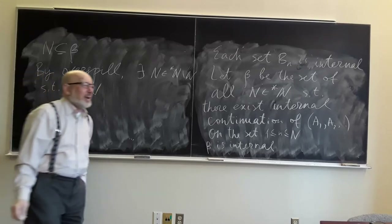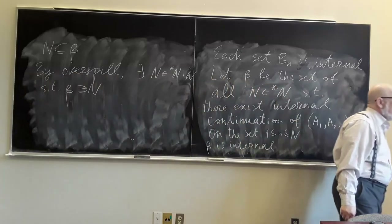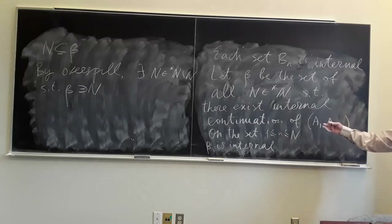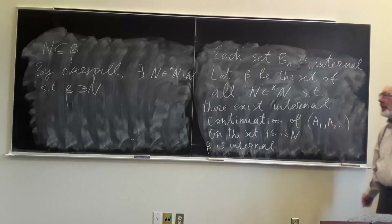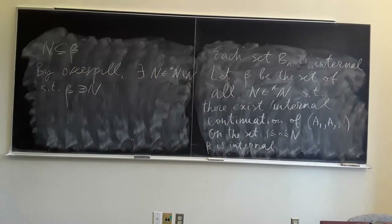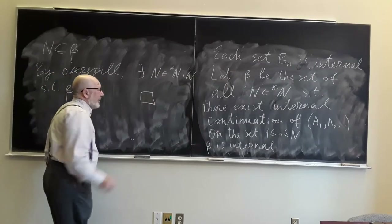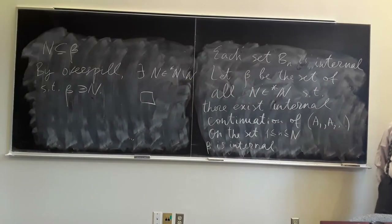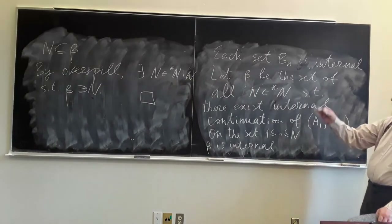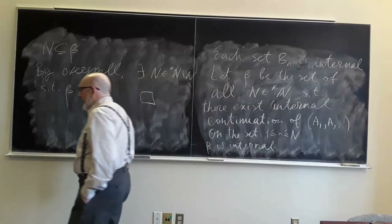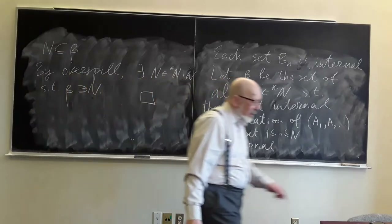So for this infinite N, we have an internal continuation of our sequence to all non-standard indices from 1 to N. That's it. Now we have to look at what time it is. I will need both these theorems — countable saturation and countable comprehension — in constructing the Loeb measure.